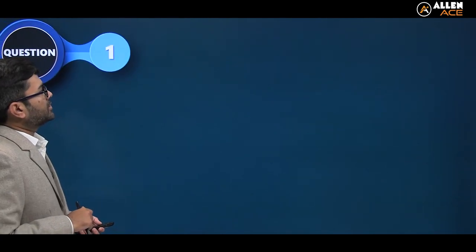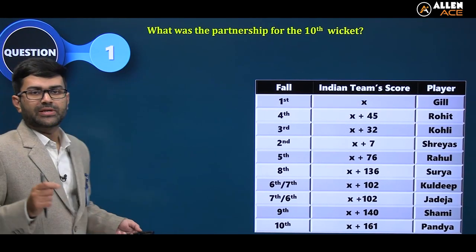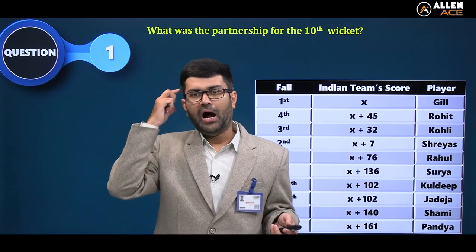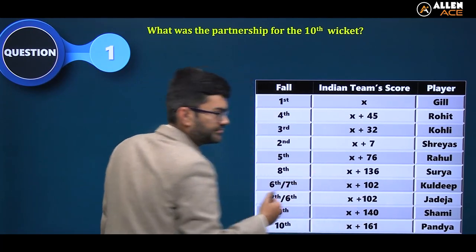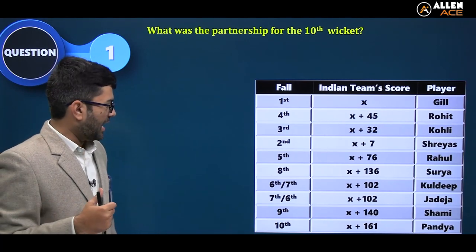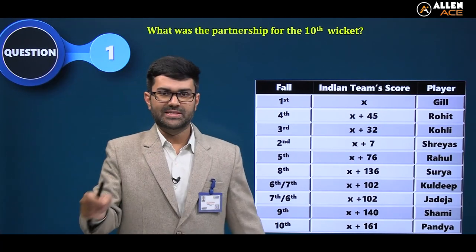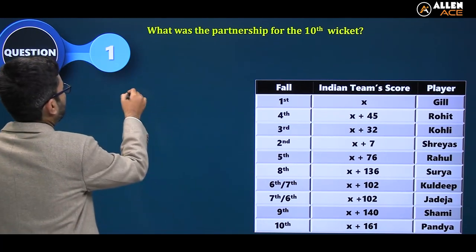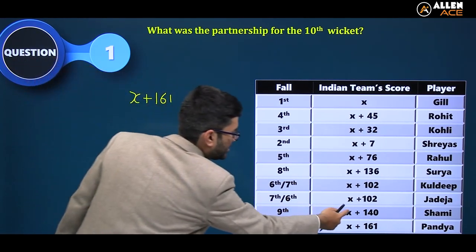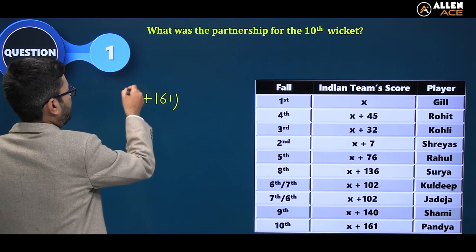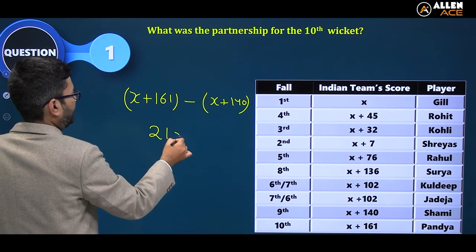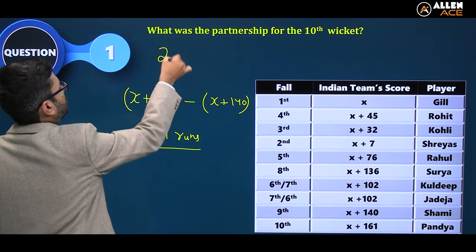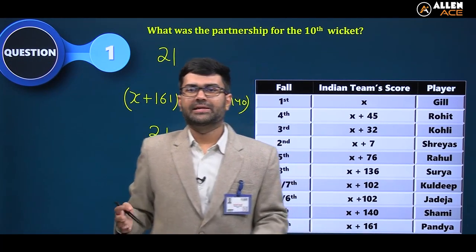Question 1: What was the partnership for the 10th wicket? The 10th wicket fell when Pandya got out at x plus 161, and the 9th wicket fell when Shami got out at x plus 140. The partnership for the last wicket is (x+161) minus (x+140) equals 21 runs.